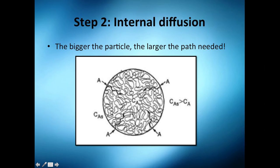So the bigger the particle, guys, the larger the path needed, of course. That's why we need more - if it's very huge particles, you're going to have small Kr.